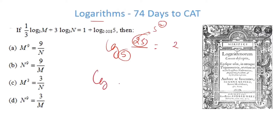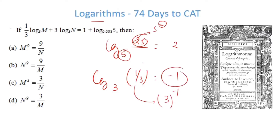Similarly, if I have log base 3 of (1/3), it converts 1/3 into some power of 3, which is minus 1. So the output is minus 1. That's how a logarithm operates.